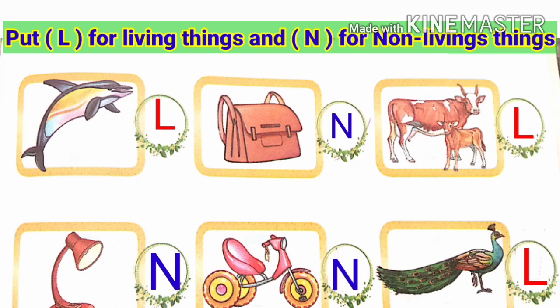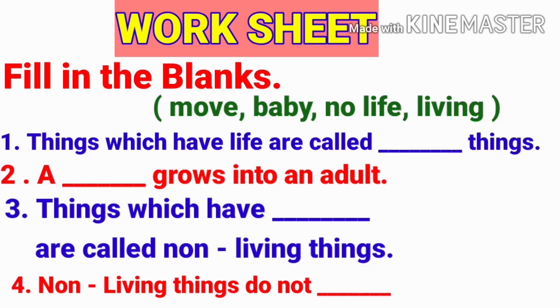Put L for living things and N for non-living things. Dolphin is a living thing. Bag is a non-living thing. Cup and saucer is a non-living thing. Lamp is a non-living thing. Bicycle is a non-living thing. Peacock is a living thing.